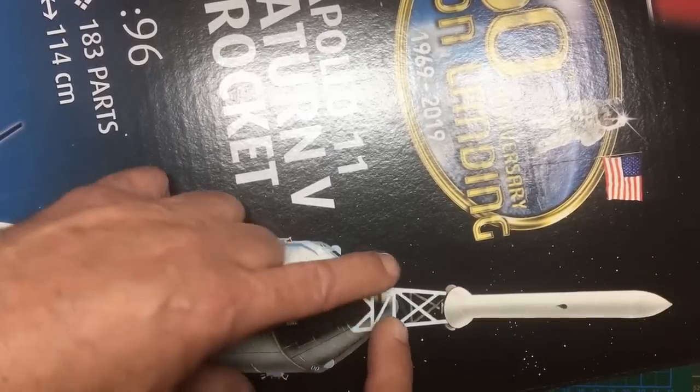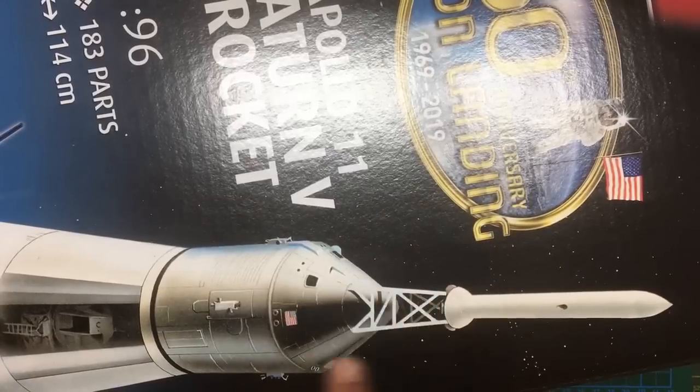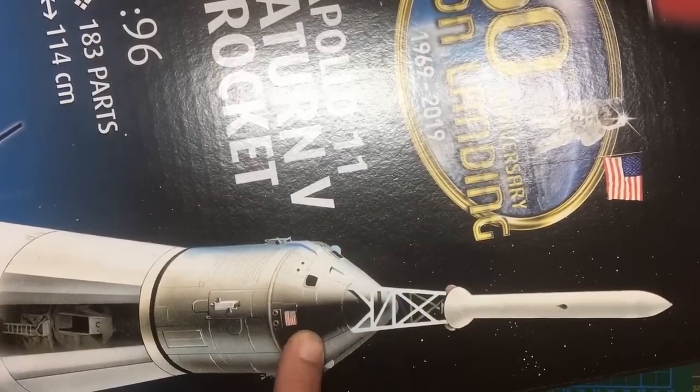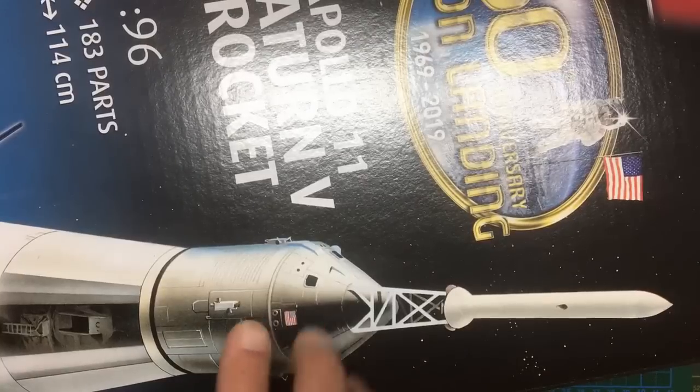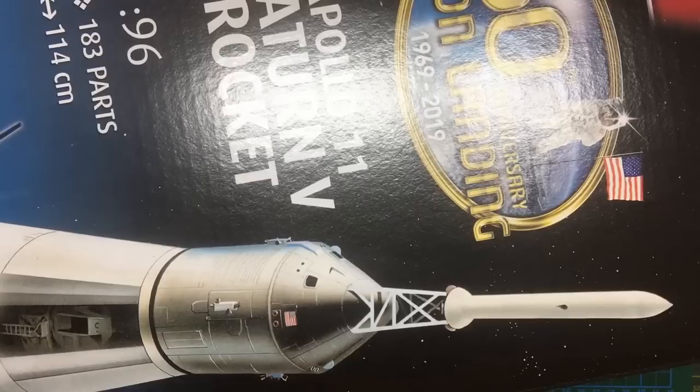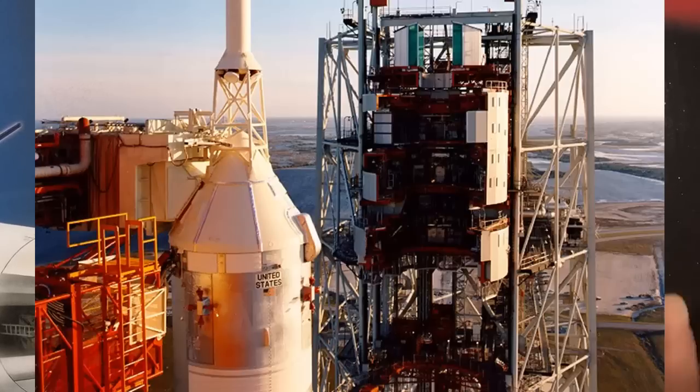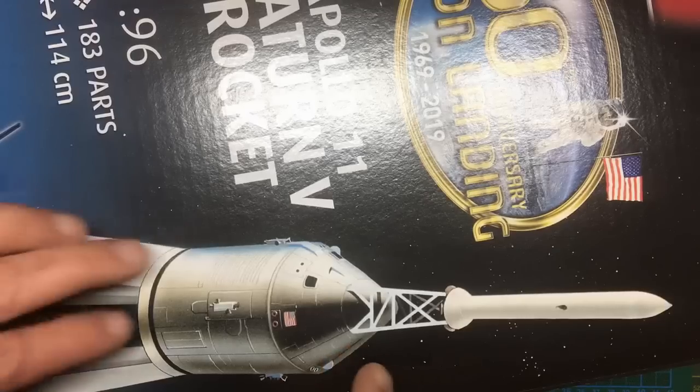The problem with that is there's a cover that goes over here, which is why when you see them going off this looks white, whereas in reality this is a very reflective chrome-like finish with strips of mylar on it. I'll put a picture up now which actually shows Apollo 8 on the tower.